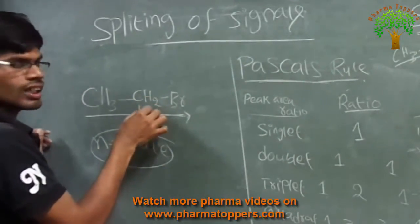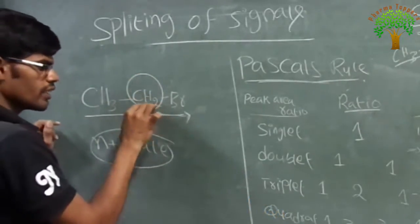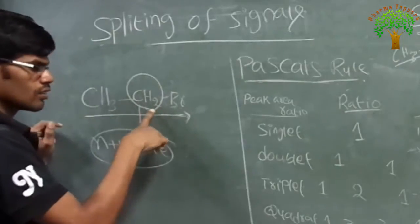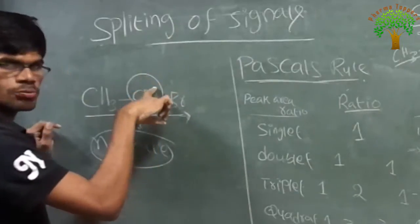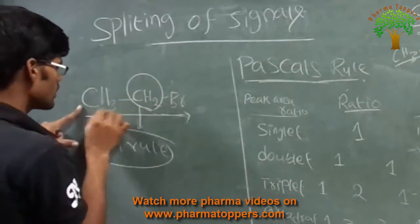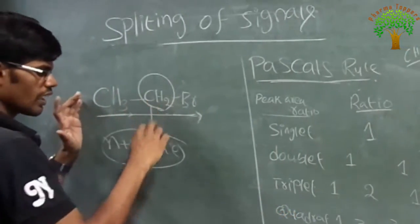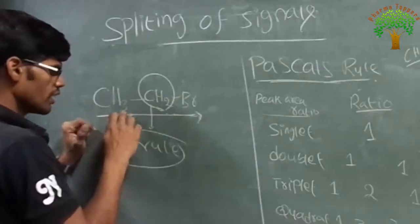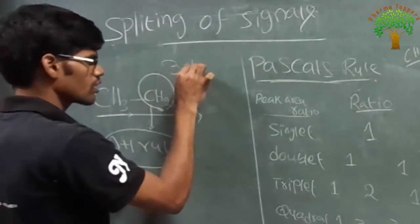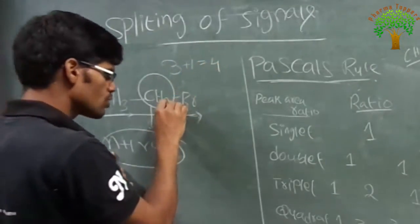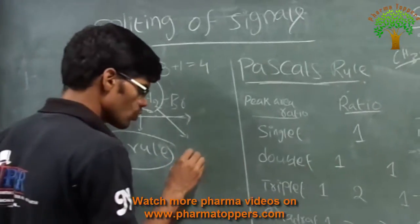Now we are going to calculate splitting of the methylene protons. How many splitting is there? The signal will divide into how many peaks. This is the methyl, this is the neighboring — these are all neighboring protons. I said n plus 1, so here how many protons is there? 3. So 3 plus 1 is equal to 4. So this CH2 will split into 4 signals.